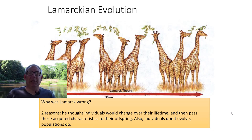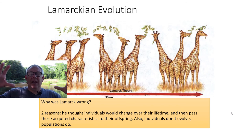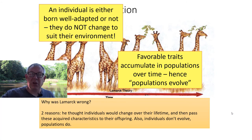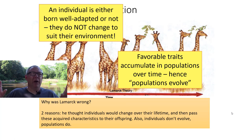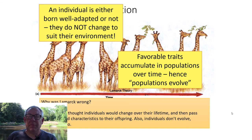The unit of evolution is the population. The average neck length in the population got longer over time — but individuals changing over time is not how evolution occurs. Individuals can change: you can work out and get stronger, get a tattoo — but you don't pass those changes on. That's why Lamarck was wrong. The population as a whole, on average, can change as one trait becomes more frequent and another becomes less frequent. So individuals don't evolve — populations do. An individual is either born well adapted or not; they don't change to suit their environment. Favorable traits accumulate in populations over time.